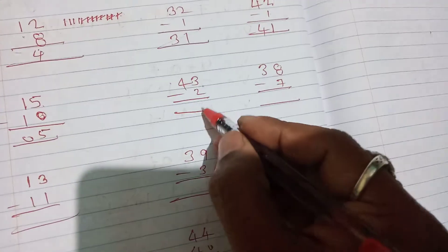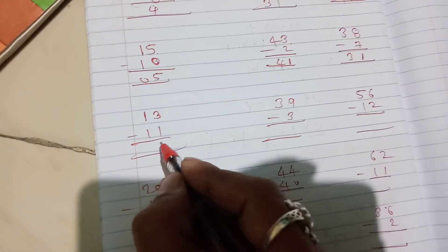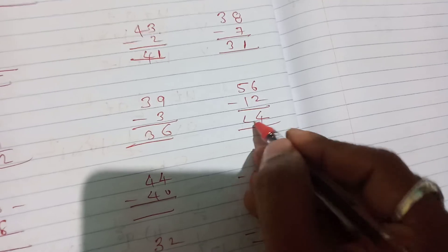1 minus 1 is 0. 3, 2, 1 to 4. 8, 7, 1 to 3. 3 minus 1 is 1. 9 minus 3 is 6. Then 3, 3. Next 6, 6, 2, 0, 4. And 5, 3, 4.